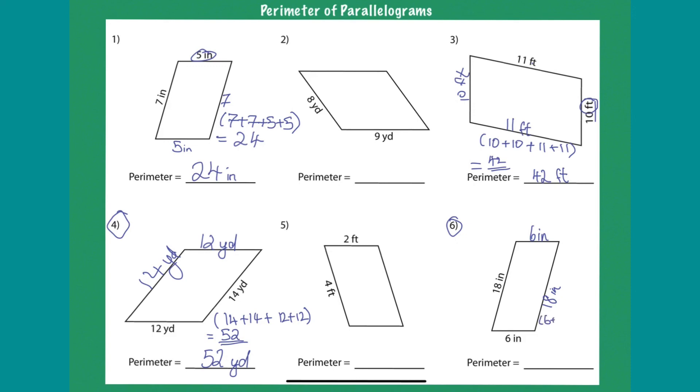You would do six plus six plus eighteen plus eighteen. And your final answer would be six plus six gives you twelve. Twelve plus eighteen gives you thirty. Thirty plus eighteen gives you forty-eight. And your final answer therefore is forty-eight inches.